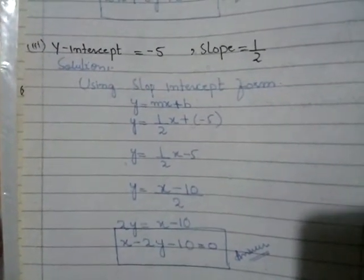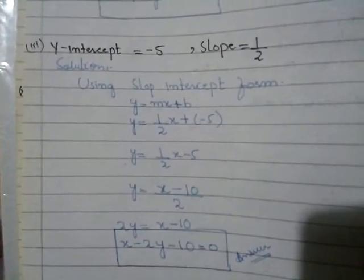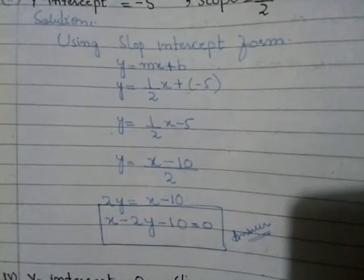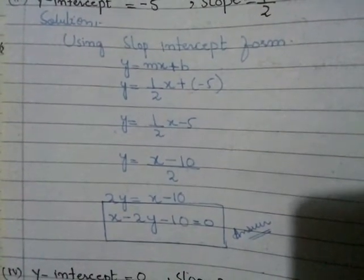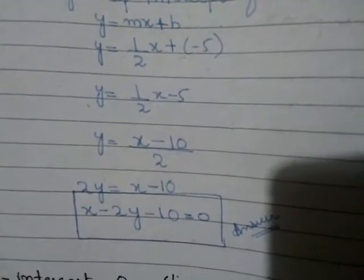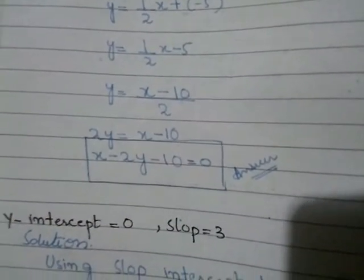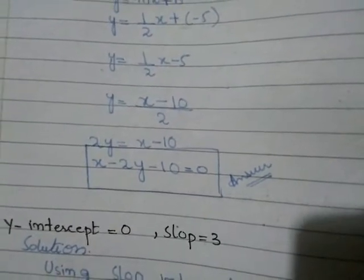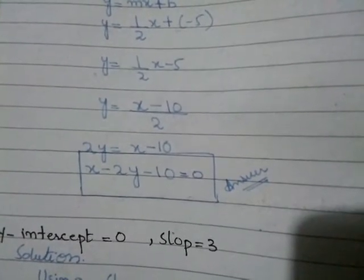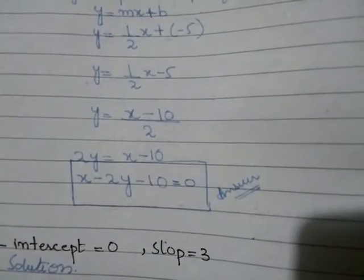Solution: using slope-intercept form, y = Mx + B. y = (1/2)x + (−5). Taking LCM of 2: 2y = x − 10. Rearranging: x − 2y − 10 = 0. This is our required equation of a straight line.